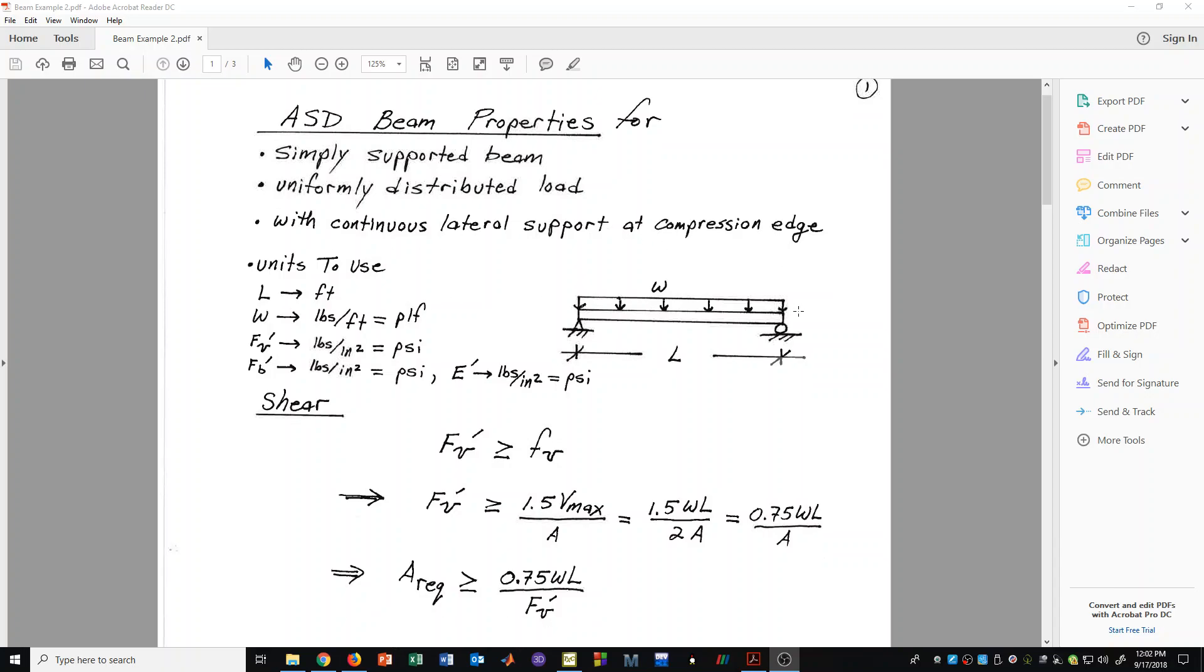First off, we are considering the very specific case of a simply supported beam with a uniformly distributed load. When we are designing a beam to support these loads, it is very common for us to have the length of the span provided in feet, the load in pounds per foot or PLF, and for our allowable stresses to be in PSI, and even our modulus of elasticity to be in PSI. It would be nice if we had formulas set up to accept these variables in these units and then give out the answers in the correct units. You will see how this takes place as we do the following derivations.